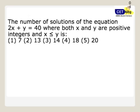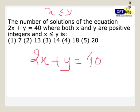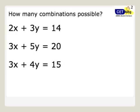Let's take one example. This is a CAT paper question from CAT 2014: 2x plus y equals 40. I've taken this question from the CAT exam. Value of x has to be less than or equal to y. x and y are both positive integers. Find the different combinations of x and y.